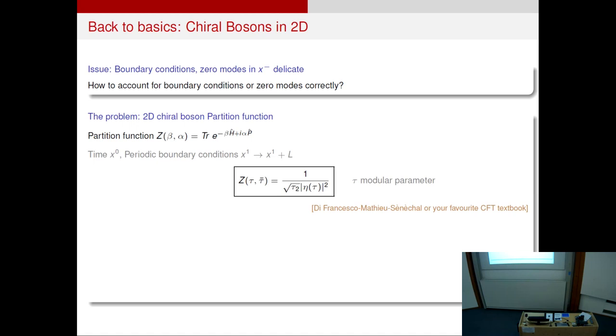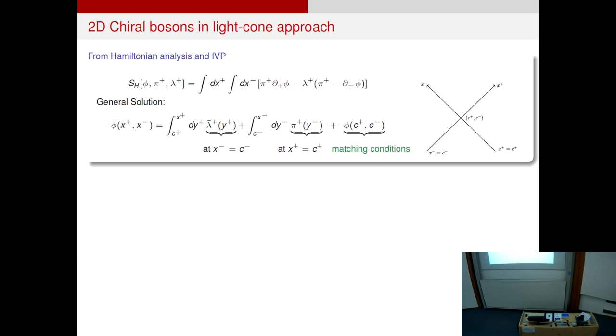So this is the issue that we were looking at, how to account for boundary conditions or zero modes in the light cone formulation. And we wanted to reproduce this well-known partition function for 2D chiral bosons. And we wanted to do it in the light cone formulation. Now, if you look at the equation of motion for 2D bosons in light cone coordinates, you immediately see that there are left movers and right movers. But what we found very hard to do was to reproduce this particle zero mode contribution, the square root tau, tau 2. And that's why we did a canonical or Hamiltonian analysis, where we saw that in the general solution from the Hamiltonian equations of motion, we see that there is a part of the initial data which lies on this front. A part of the data lies on that front. And you must also consider a matching condition at the intersection. So this again reminds us of something which is similar to the asymptotic structure of spacetime, where you need matching conditions at spatial infinity.